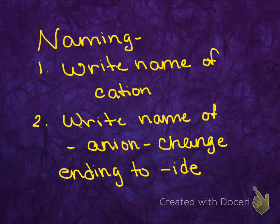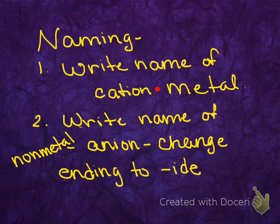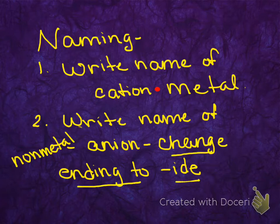The first thing we want to do is name compounds. So if we're given the formula, we want to give that compound a name. The first thing we do is write the name of the cation, the metal, which always comes first. Then we write the name of the anion, or the non-metal, which comes second. The one thing we're always going to do is change the ending of the non-metal to -ide.